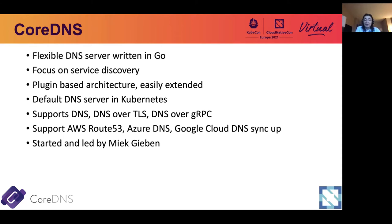Unlike some other DNS servers, CoreDNS has a focus on service discovery. It is plugin-based, which means it can be easily extended for new functionalities. If you have a new feature you want to add and it's not available in the default plugin, then you can write your own if you know how to write in Go. Most importantly, CoreDNS at the moment is the default DNS server in Kubernetes, which means if you are using Kubernetes, you are probably already using CoreDNS.